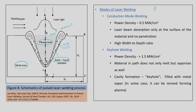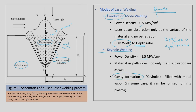In summary: for conduction mode, power density is around 0.5 megawatt per centimeter square, producing a high width-to-depth ratio with a low aspect ratio. For keyhole welding, power density is about 1.5 megawatt per centimeter square or more, generating a cavity — the keyhole — which is used for joining thicker materials.